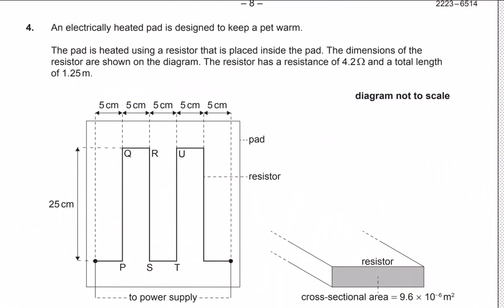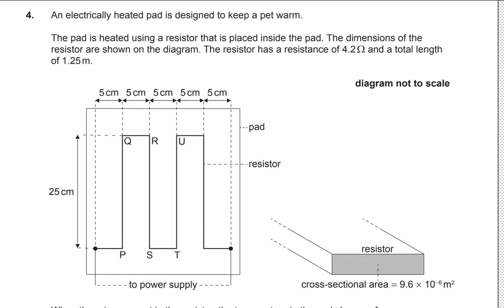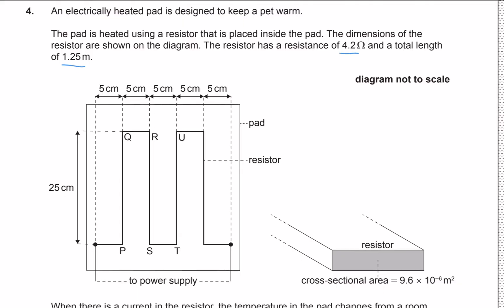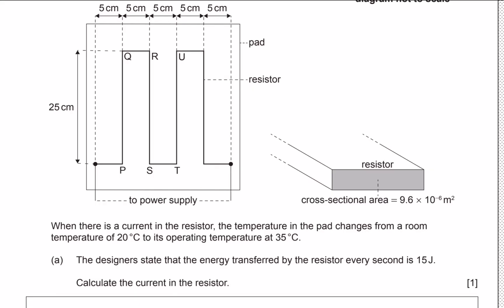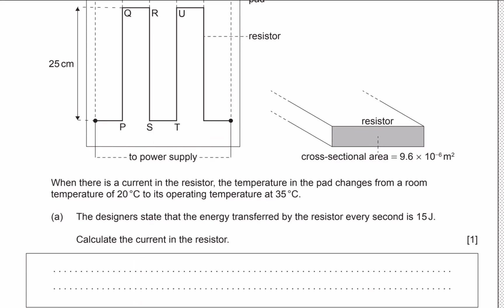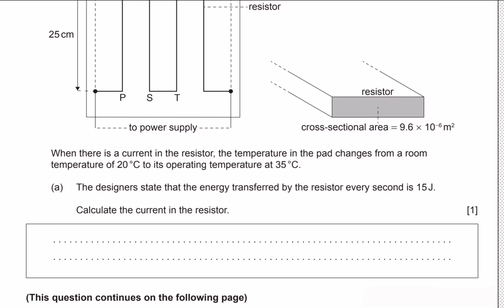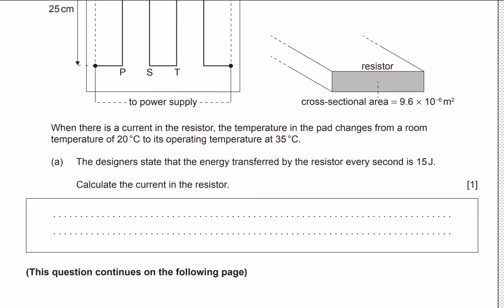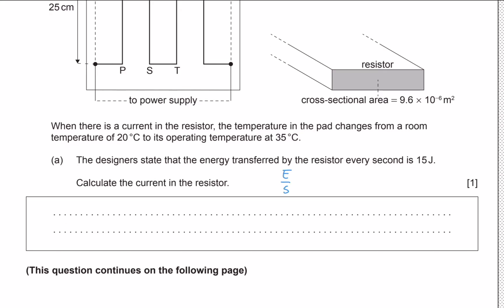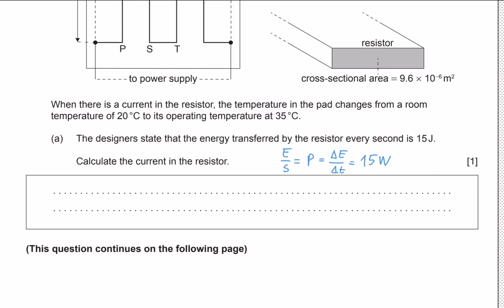Welcome to this new video. This is question 4 in the May 2023 timezone 2 paper 2. We're given an electrically heated pad with a total length of 1.5 meters and a resistance of 4.2 ohms. We need to calculate the current given that we transfer 15 joules of energy per second. Energy per second is just power, defined as the change in energy over the change in time, so we have a power output of 15 watts.